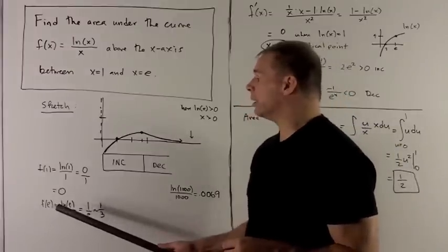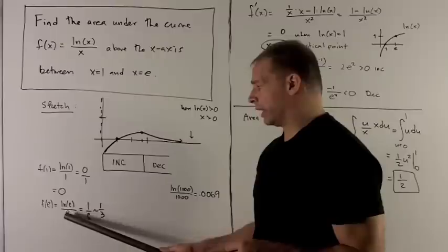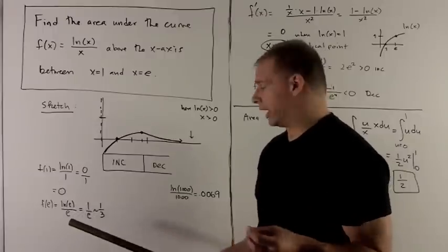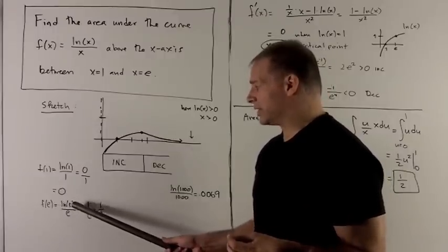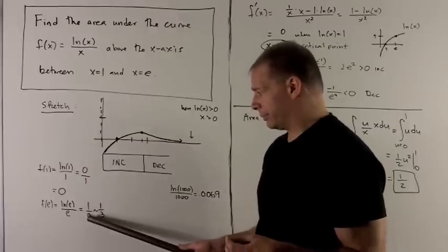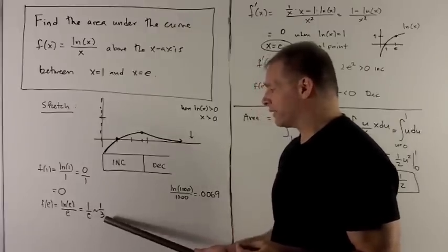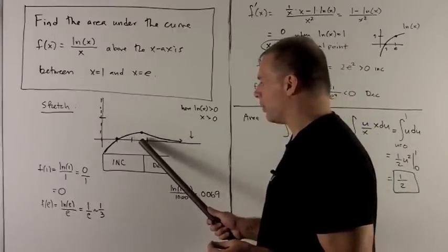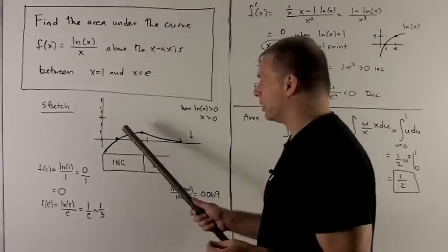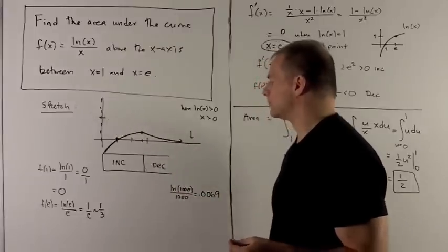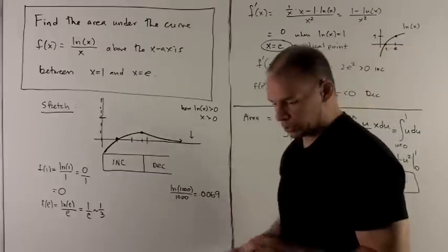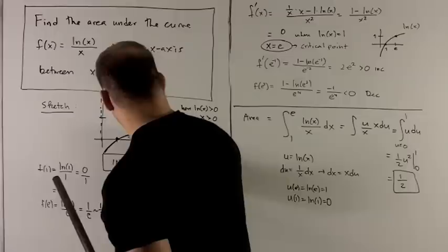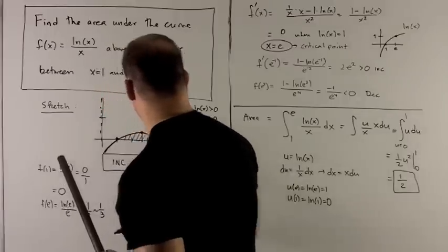If I put e in here, f(e) = ln(e)/e. Now e is about 2.7, so we might as well call it 3. ln(e) equals 1, and then e goes in the bottom, so this is roughly one-third. So if e is about 2.7, I wind up at roughly one-third when this equals 1. Those are my two points, and the area we'll eventually be interested in is right there.